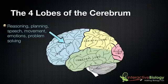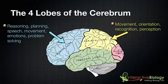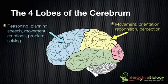Then we have the parietal lobe, which is involved in movement, orientation, recognition, and perception.